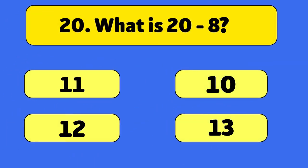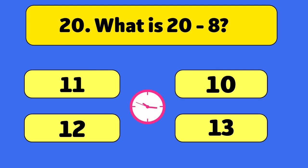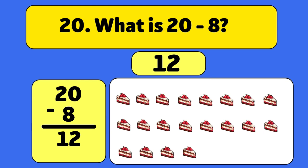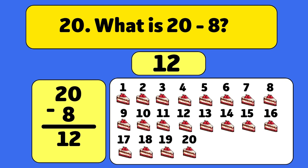What is 20 minus eight? The answer is 12. We start with 20 cakes and take away eight. Let's count. One, two, three, four, five, six, seven, eight. We have 12 cakes left.